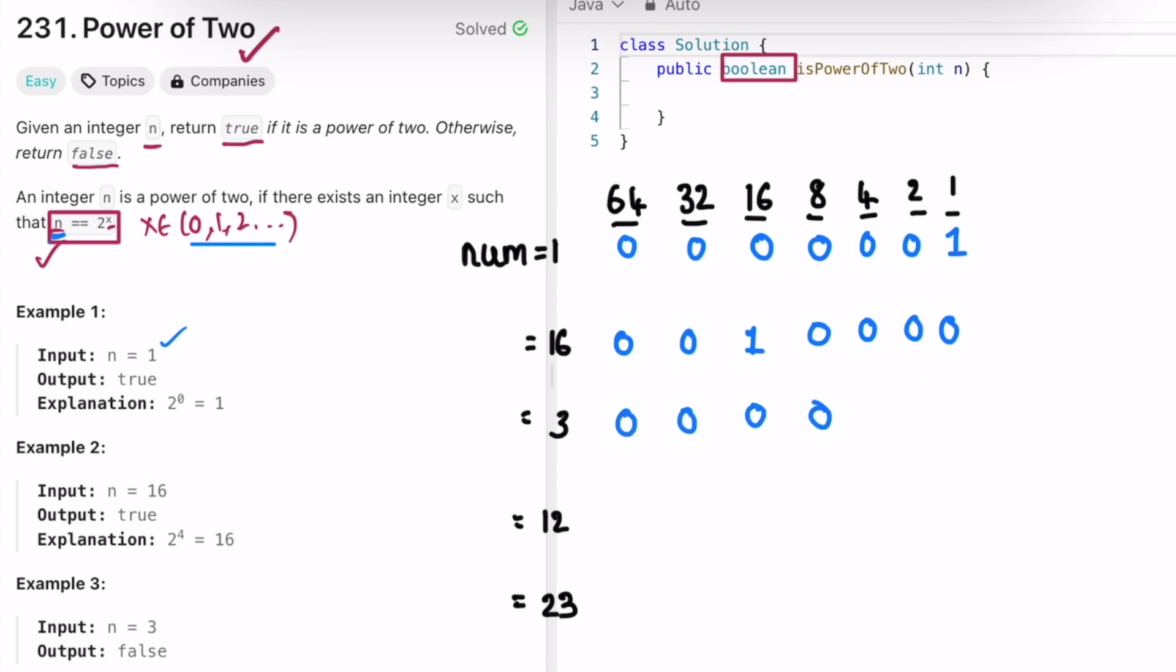For 12, 8 and 4 will be set and everything else is 0. And for 23, 16, 4, 1, and 2 will be set and everything else is 0. Out of all this, what are the powers of 2?